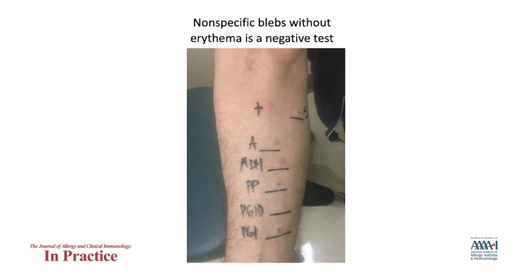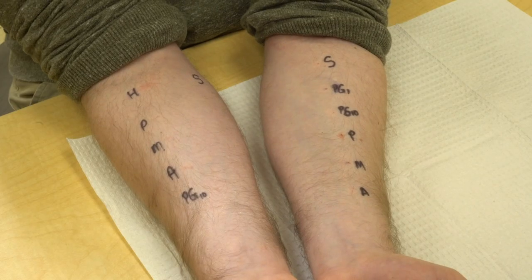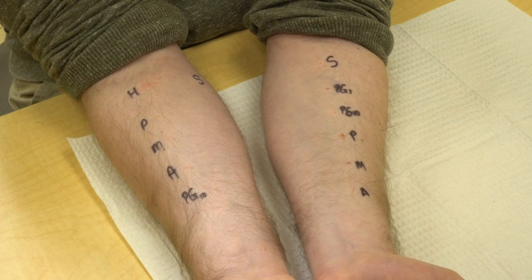After the skin testing is complete and documented, wipe the testing area down with an alcohol swab. Application of topical diphenhydramine or hydrocortisone to the positive histamine control and other positive tests can help relieve itching, although these symptoms will resolve soon after testing without intervention. Negative benzyl penicillin major determinant intradermal results are required before proceeding to an oral challenge.